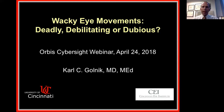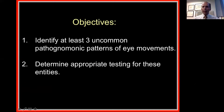We're going to run through mostly cases. In past neuro-ophthalmology webinars, which have been recorded and are on CyberSight, we've talked in a couple of different webinars about different types of common eye movement abnormalities — cranial nerve palsies, myasthenia, and so on. This talk is a bit more advanced, covering conditions that are not quite so common. My objectives are that when we're done, you'll be able to identify at least three uncommon pathognomonic patterns of eye movements and determine appropriate testing for those entities.